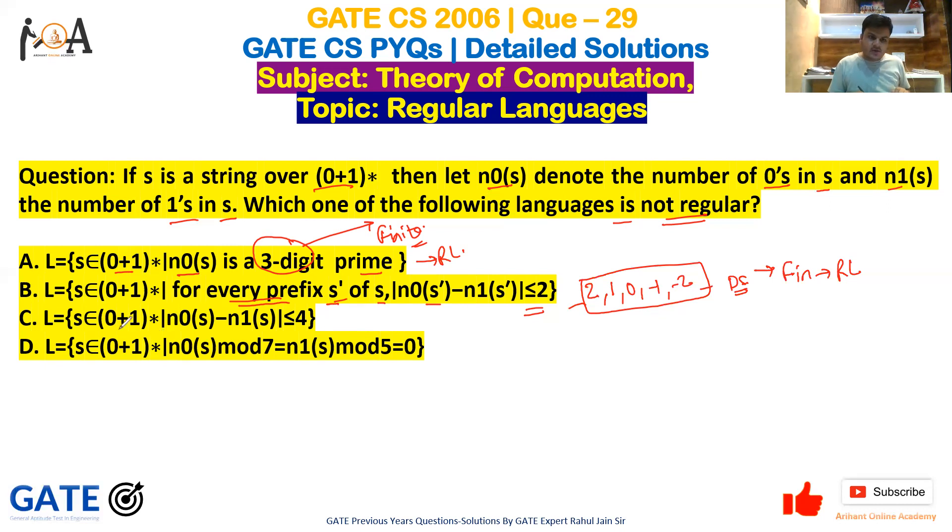If it is finite, it means it is also regular. Scan option C: s∈(0+1)*, |n0(s)-n1(s)|≤4. Now here we are just asking about the number of zeros in the string and number of ones, difference between them less than or equal to four.